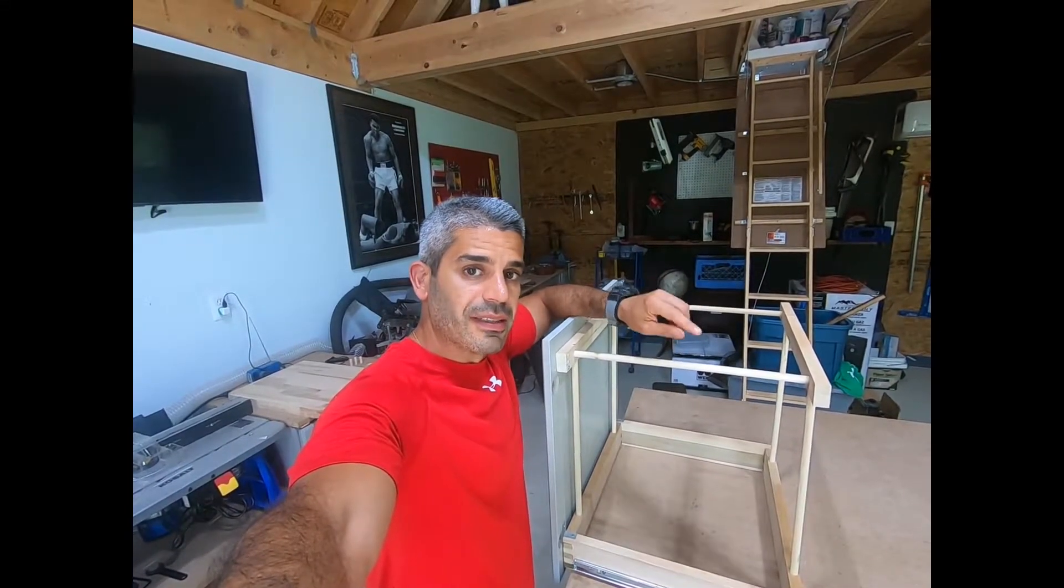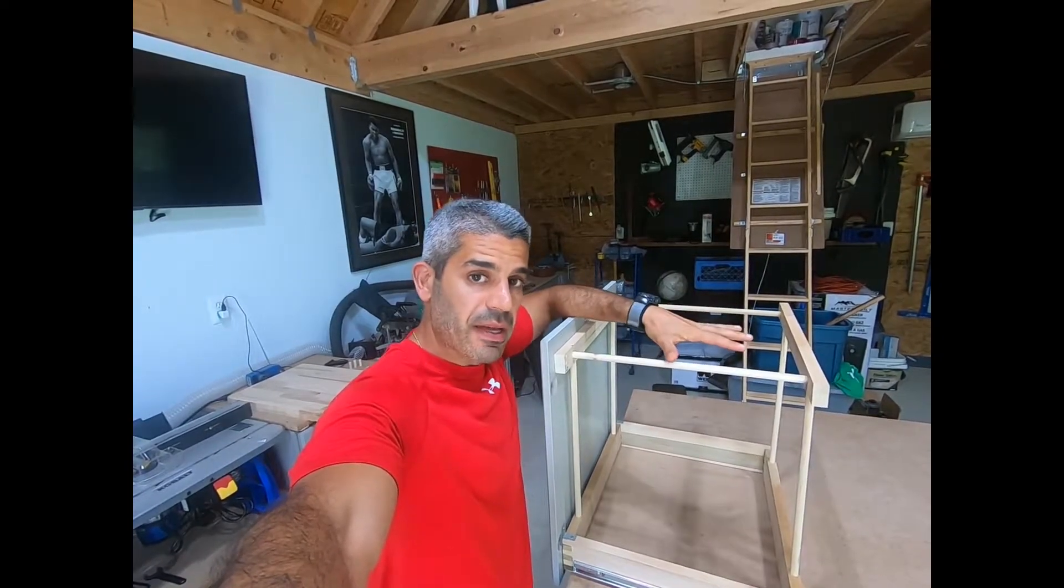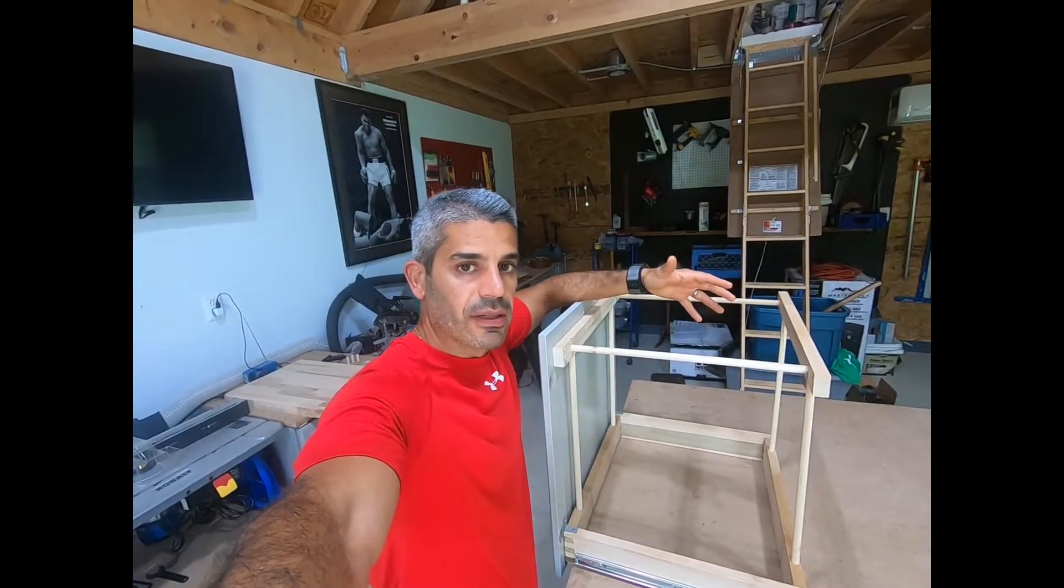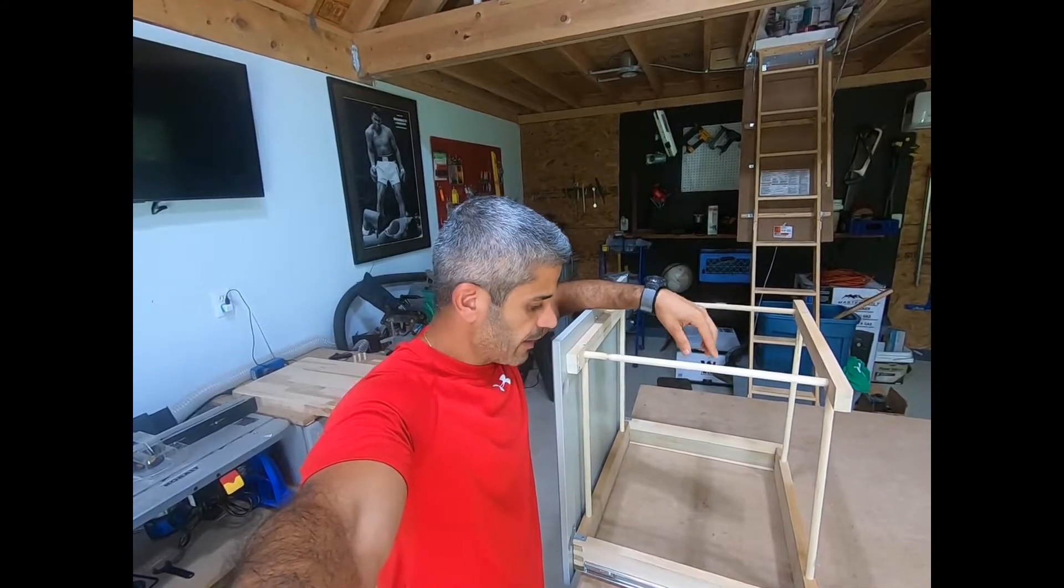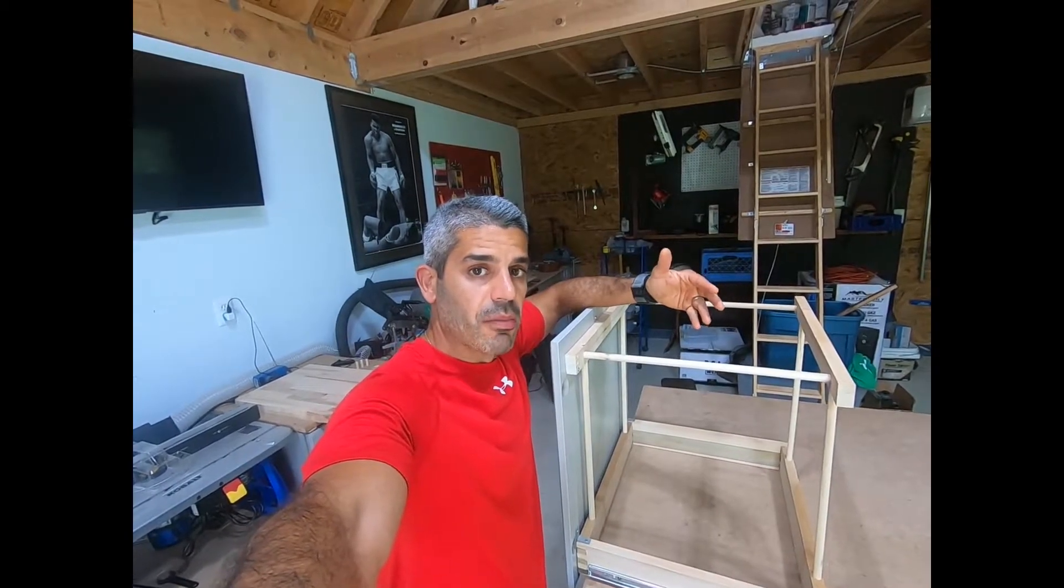Before I wrap up the video, I want to share with you another addition that you can do to this hamper pullout. And that is adding a base. So that way, you can put a basket or whatever it is in here. And that's really easy. You just have to add some cleats and a base. Let me show you what I'm doing.